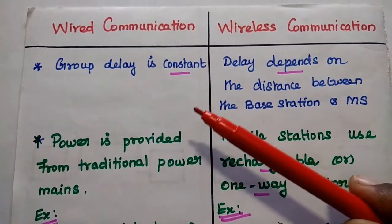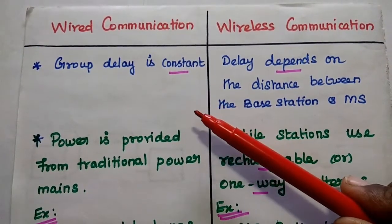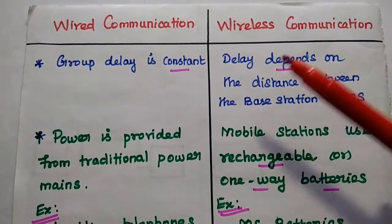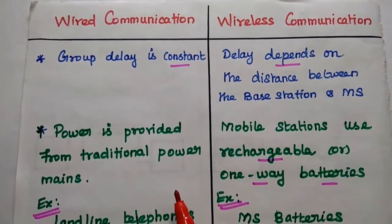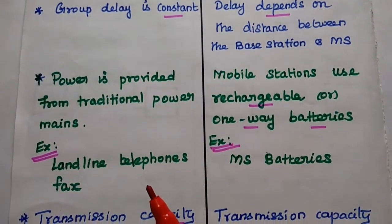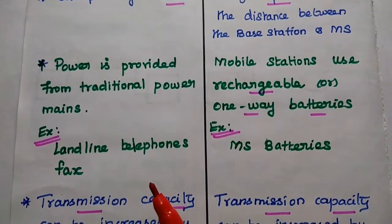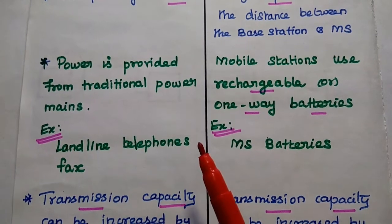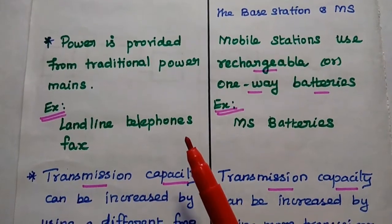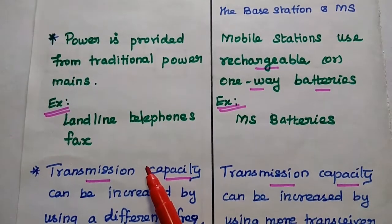In wired communication, the group delay is constant. But for wireless communication, the delay depends on the distance between the base station and the mobile station. Because the mobile station is continuously changing, the delay also depends on the distance between the base station and the mobile equipment.